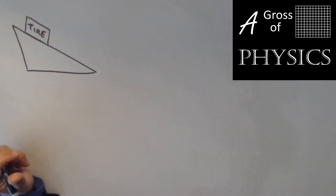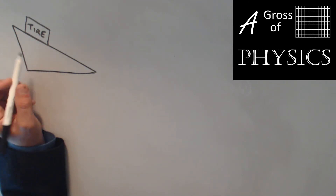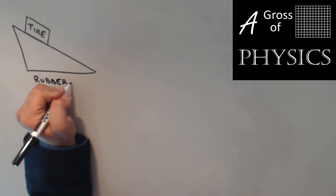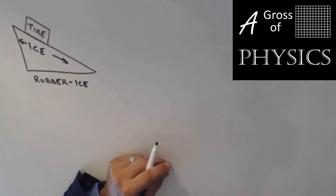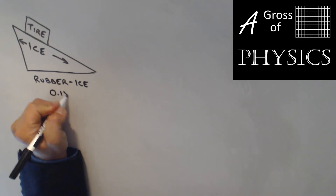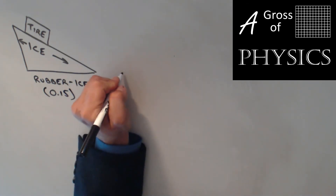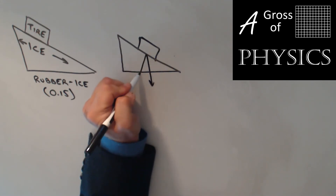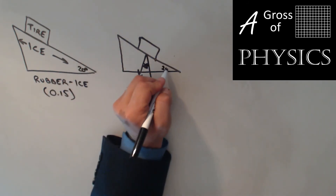This next problem involves an inclined plane, a tire, and some friction. We have a tire lying flat on its side sliding down an icy incline, so our surface combination is rubber and ice. Looking at the reference table, rubber on ice has a kinetic coefficient of 0.15 — no static value is listed. The tire is moving, and the incline angle is 20 degrees, with a tire mass of 15 kilograms.